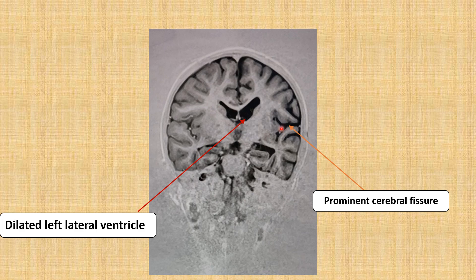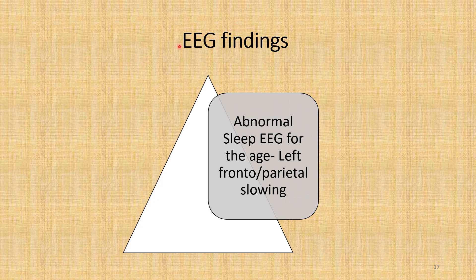The right side of the brain is totally normal. Only on the affected left side is there unilateral cortical atrophy and unilateral ventricular dilatation — characteristic of Rasmussen's encephalitis, which involves unilateral inflammation of the brain. In our case, the EEG finding showed abnormal sleep EEG with left frontal-parietal slowing.